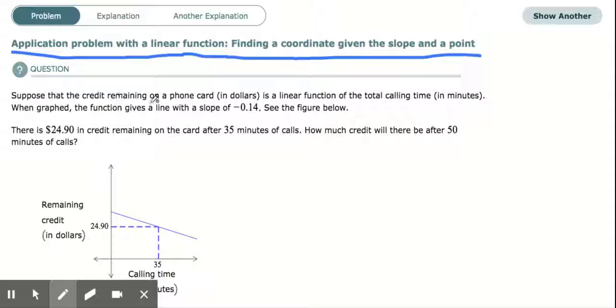Suppose the credit remaining on a phone card in dollars is a linear function of the total calling time in minutes. When graphed, the function gives a line with a slope of negative 0.14. See the figure below.